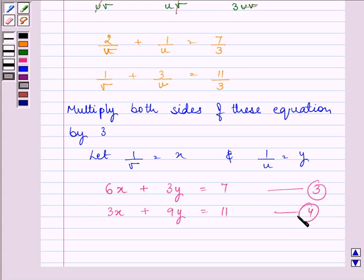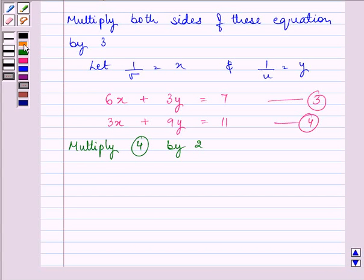Now, we'll be solving these equations by equating the coefficient of x. And for doing it, we need to multiply fourth equation by 2. And on doing it, we have 6x plus 3y is equal to 7 and 6x plus 18y is equal to 22.